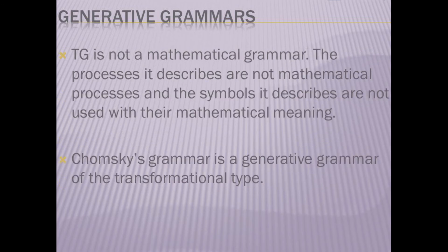TG is not a mathematical grammar. The processes it describes are not mathematical processes, and the symbols it uses are not used with their mathematical meaning. Chomsky's grammar is a generative grammar of the transformational type.